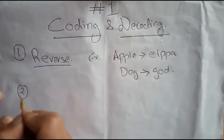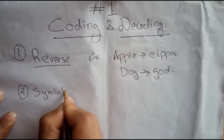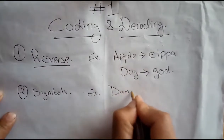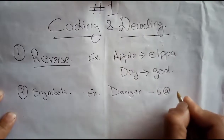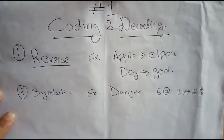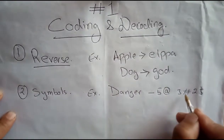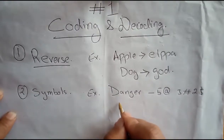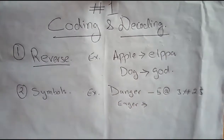Now we move to the second type: use of symbols. For example, if DANGER was coded as $5@3#2, and if DANGER is coded as $5@3#2 — how will EAGER be coded? So in that case, we need to work out what each letter symbolizes.